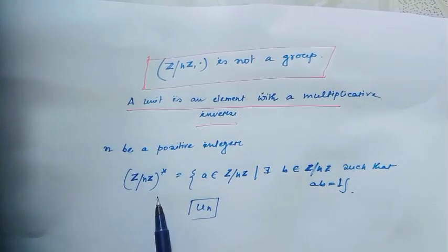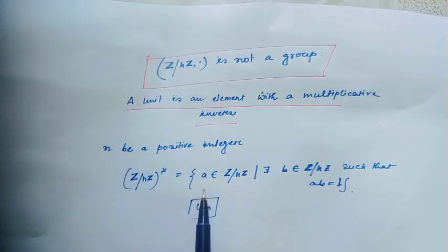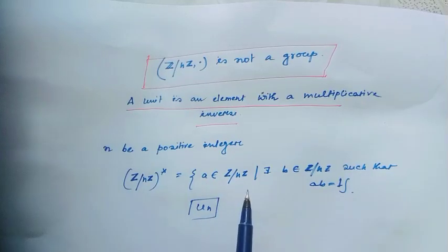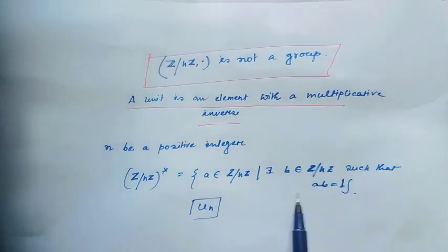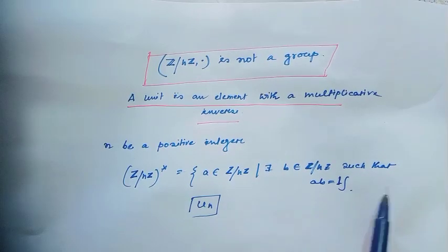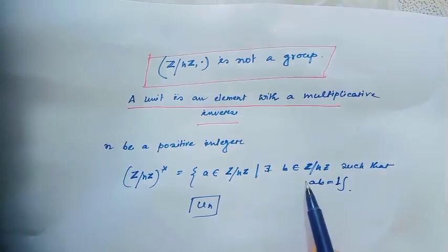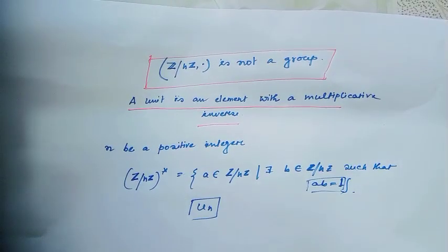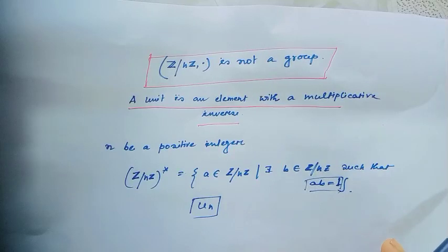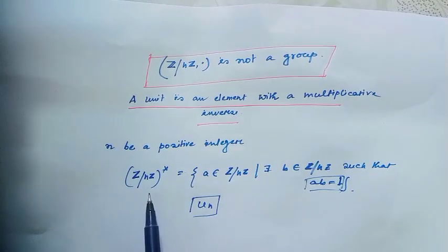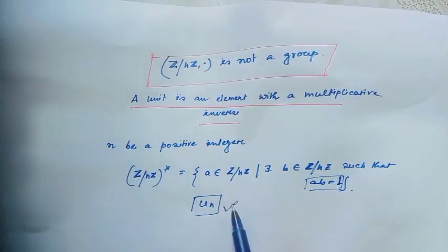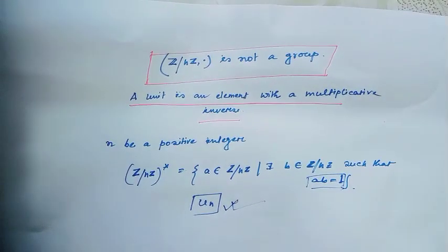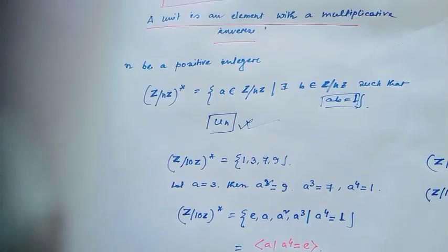The units of Z mod nZ are denoted as Z mod nZ star, which contains elements a in Z mod nZ star such that there exists b in Z mod nZ with ab equal to 1, where 1 is the identity element. The notation for this group, which contains the multiplicative inverses of Z mod nZ, is Un.